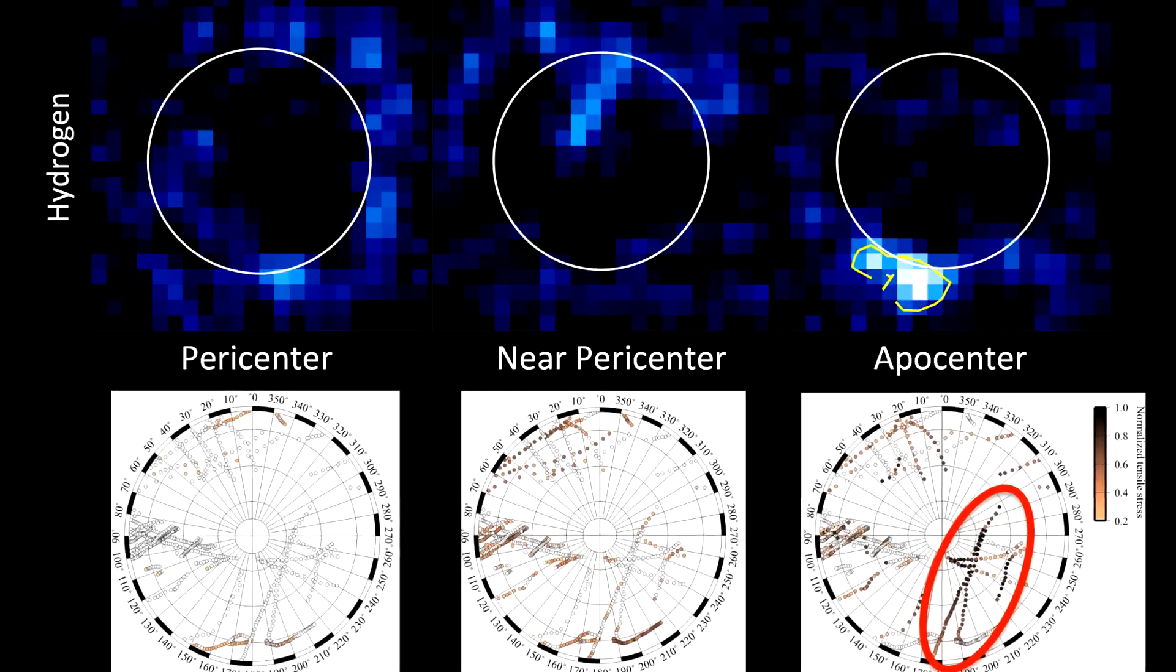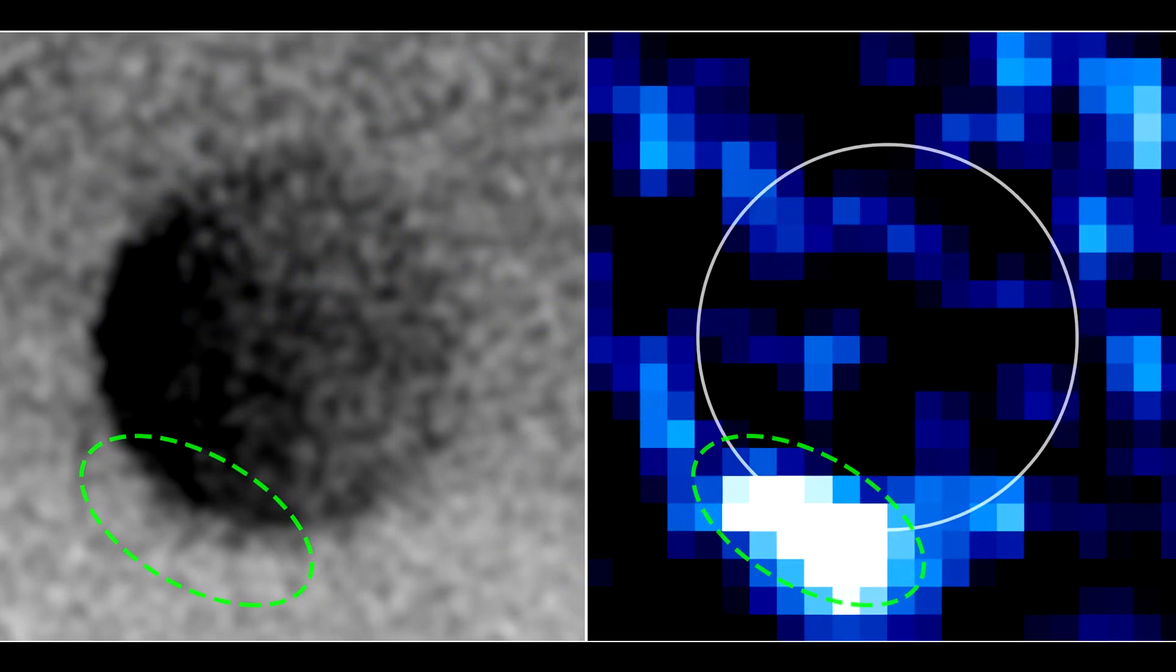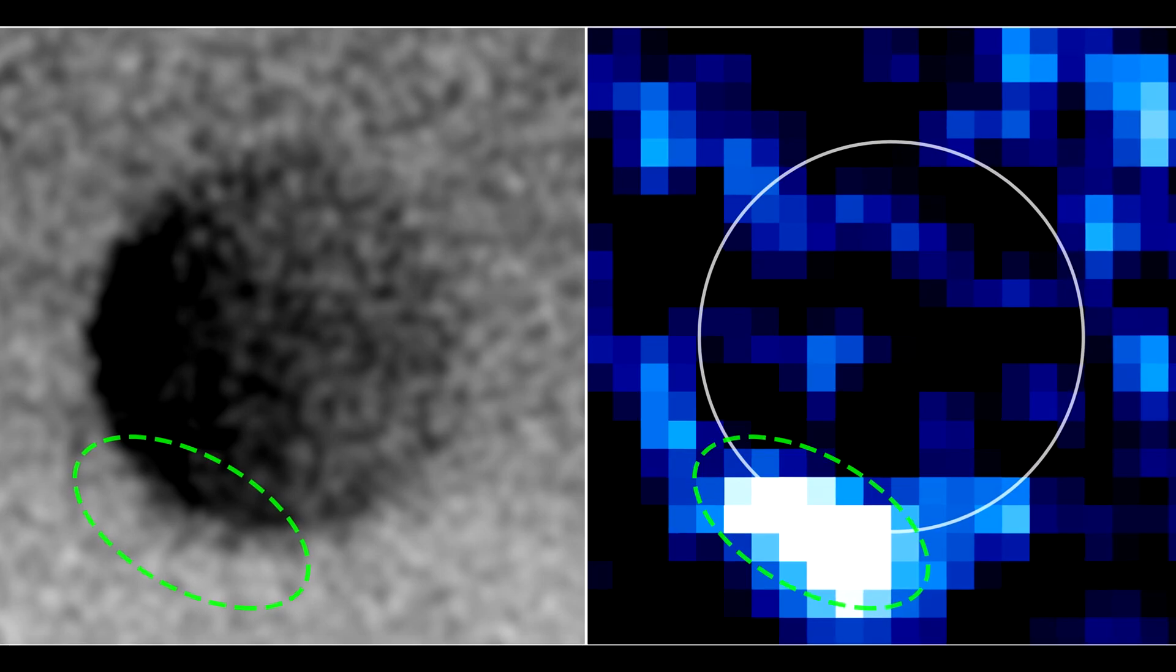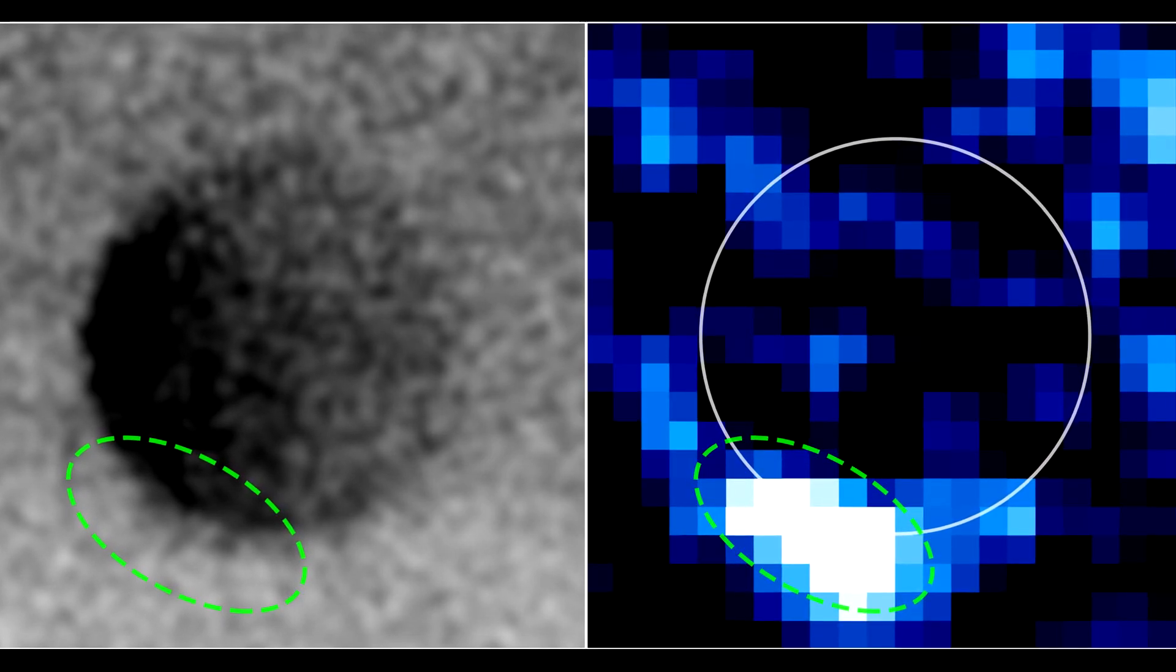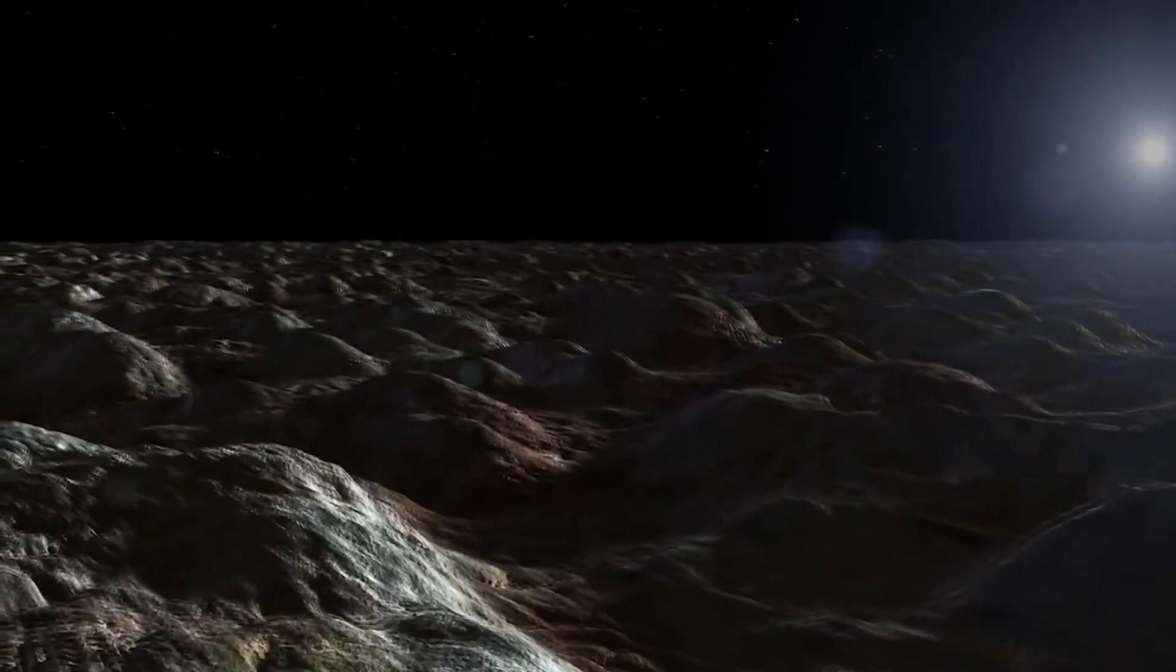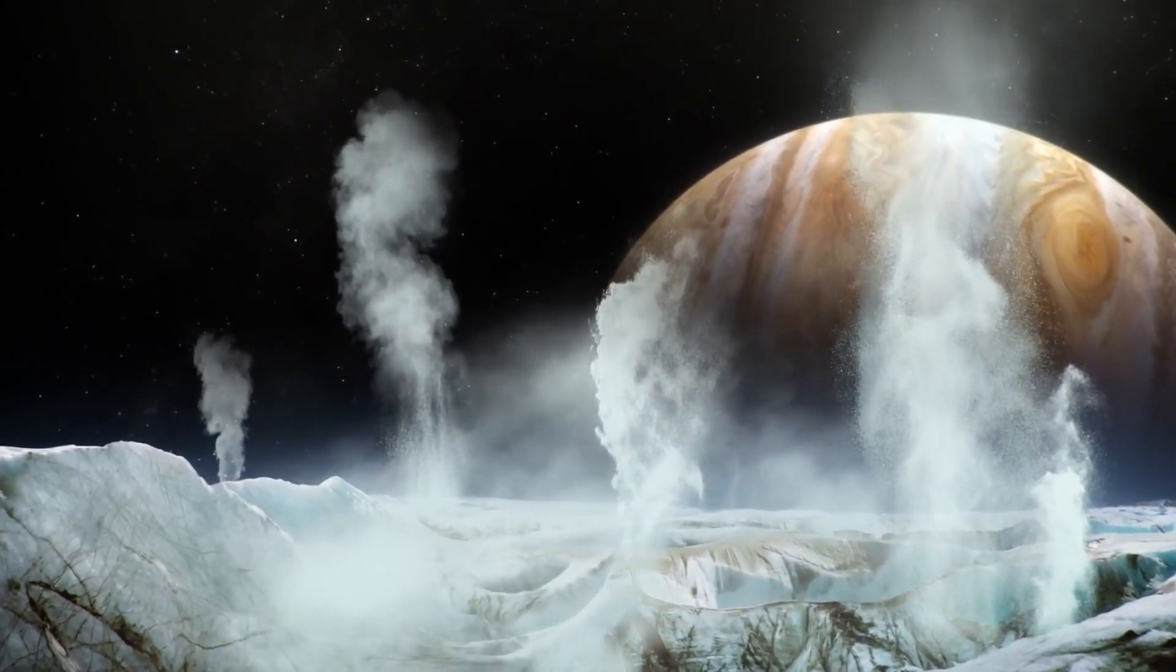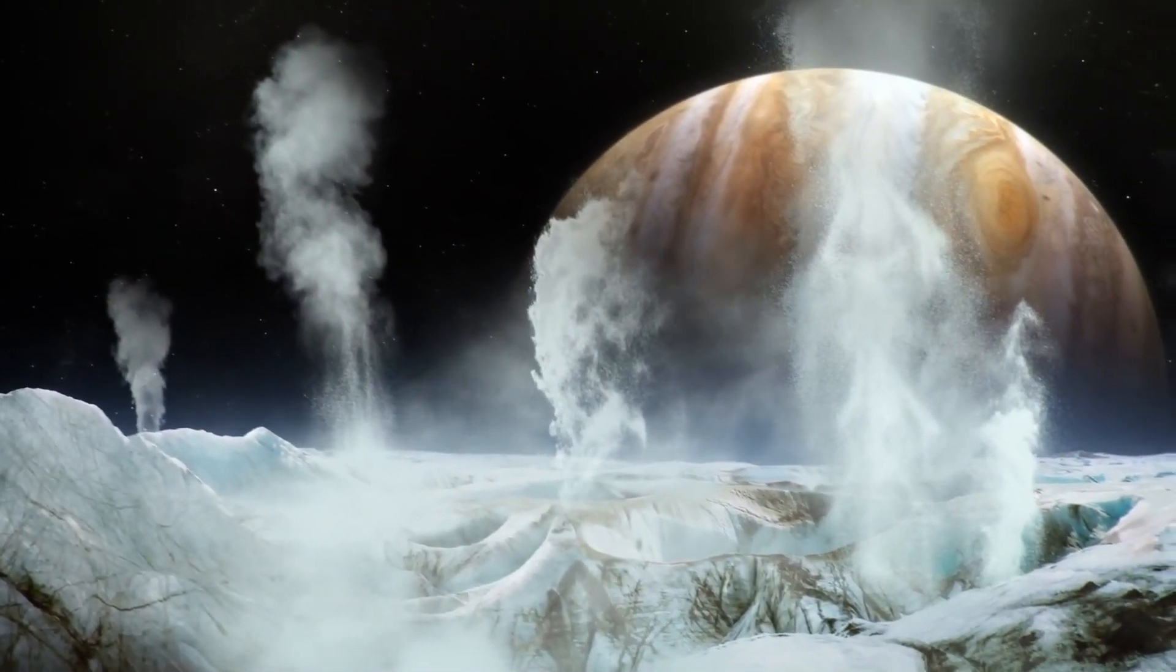According to the researchers' calculations, the blowout was so powerful and it contained so much water that it could fill an Olympic pool in just several minutes. Water entered the atmosphere at a rate of about 2,360 liters per second. If the dwellers of Europa were in that stream, that would have been their last attraction.